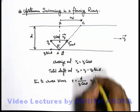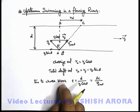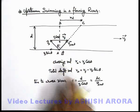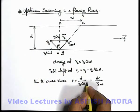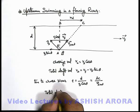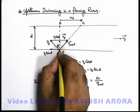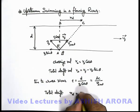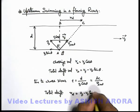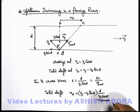Using this time, we can calculate the total drift: x_d equals the drift velocity (u_f minus v_s sin θ) multiplied by d divided by v_s cos θ. Be careful about such analysis because there will be several questions based on these analyses.